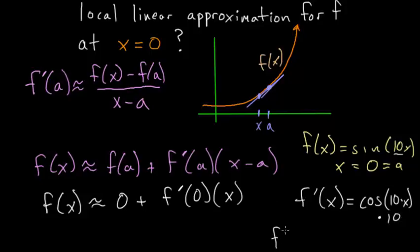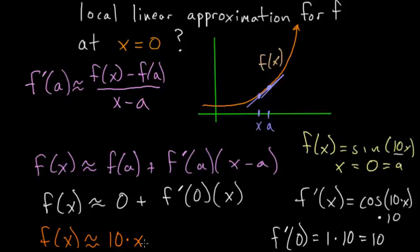And so if we evaluate the derivative at an x value of 0, the cosine of 0 is just 1. So we have 1 times 10, which is 10. So now our formula for f(x) becomes f'(0), which we know is 10 times x. So what we found is that for x values very close to 0, this function here behaves the same way as the line 10 times x.